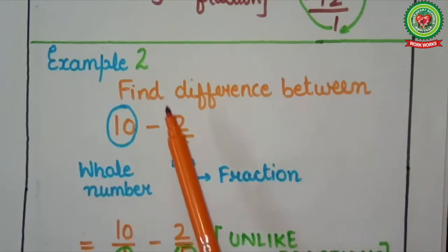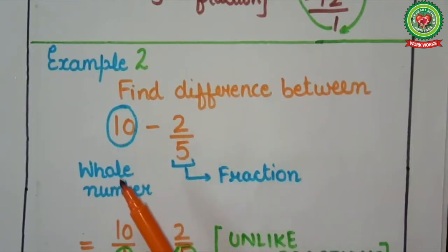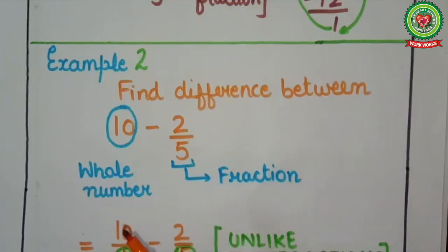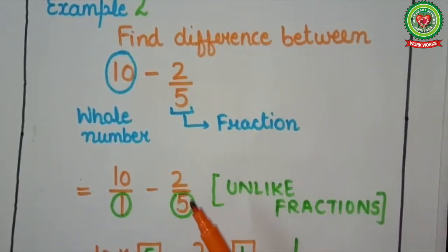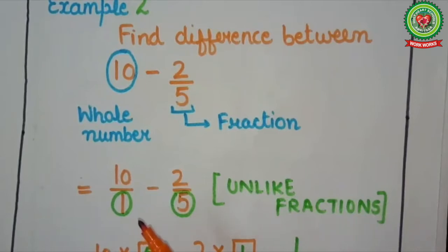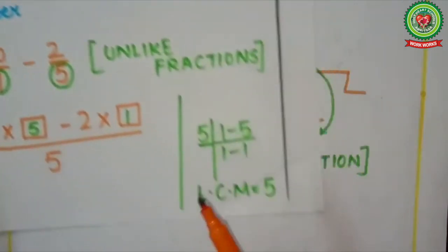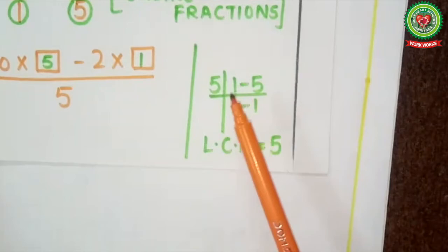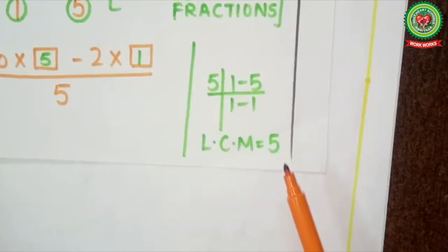Let's take example 2. Here you have to find the difference between 10 and 2 upon 5. 10 is a whole number and 2 upon 5 is a fraction. So first of all, you will change the whole number into a fraction. For that, I will write 10 upon 1 minus 2 upon 5. Step 1: check the denominators. Denominators are 5 and 1, these are not the same, therefore these fractions are unlike fractions. Next step is to find out the LCM of 1 and 5. LCM will come 5, because LCM of any number with 1 will come the same.